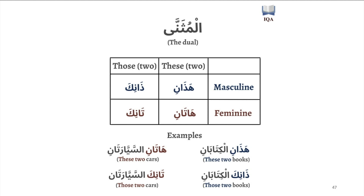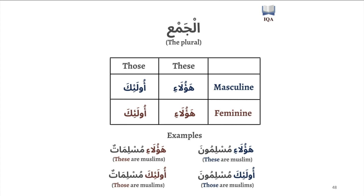So how do you refer to things that are plural? The jama' is actually a lot easier. There's no differentiating between the masculine and the feminine. So 'these,' for both masculine and feminine plural things, is the same word: ha'ulai. And 'those,' for both masculine and feminine, is likewise the same word: ula'ika.